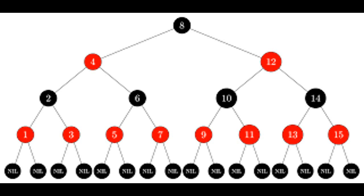Each node of the tree now contains the attributes color, key, left, right and p. If a child or the parent of a node does not exist, the corresponding pointer attribute of the node contains the value nil.